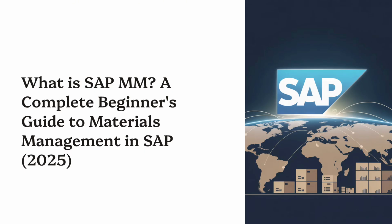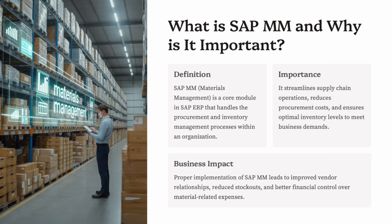In this video, we're going to walk you through everything a beginner needs to understand about SAP MM: what it is and why it matters, what core components it includes, how it connects with the bigger SAP ecosystem, how it powers the entire procure-to-pay P2P process, and what a career in MM looks like. We'll cover concepts in simple language with real-world examples. No SAP screen is required to grasp the fundamentals. If you're someone just starting out with SAP or transitioning from logistics, supply chain, finance, or procurement, you're in the right place. By the end of this video, you'll have a clear foundation of how SAP MM works and what role it plays in business processes.